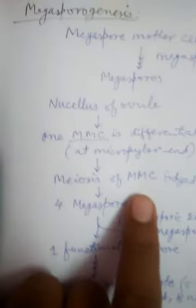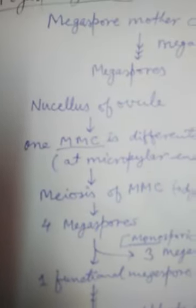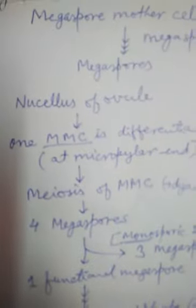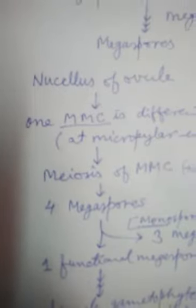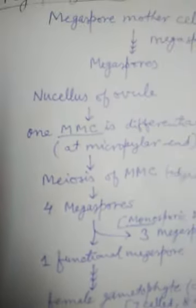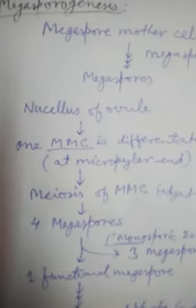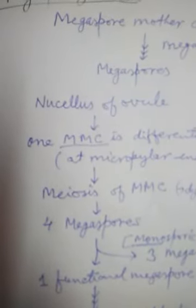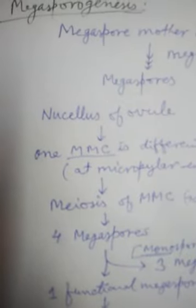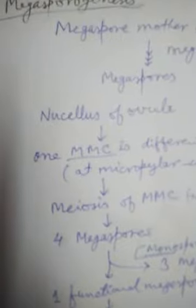Meiosis of the megaspore mother cell happens. Meiosis is a reduction division — there is meiosis I followed by meiosis II and then cytokinesis. After meiosis I, two nuclei are generated, followed by meiosis II giving four nuclei. After meiosis I with cytokinesis, a two-cell stage is generated called the dyad stage.